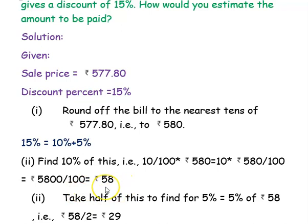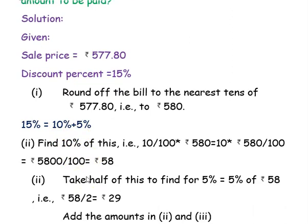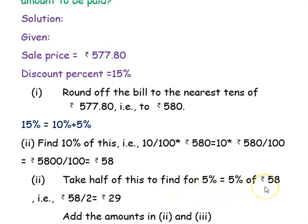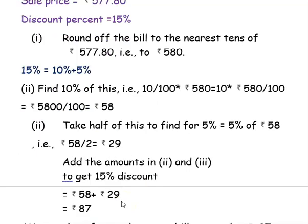Now you want to find the discount amount for 5 percent. Since 5 percent is half of 10 percent, you take half of the 10 percent amount. Half of rupees 58 is 58 divided by 2, which gives rupees 29.